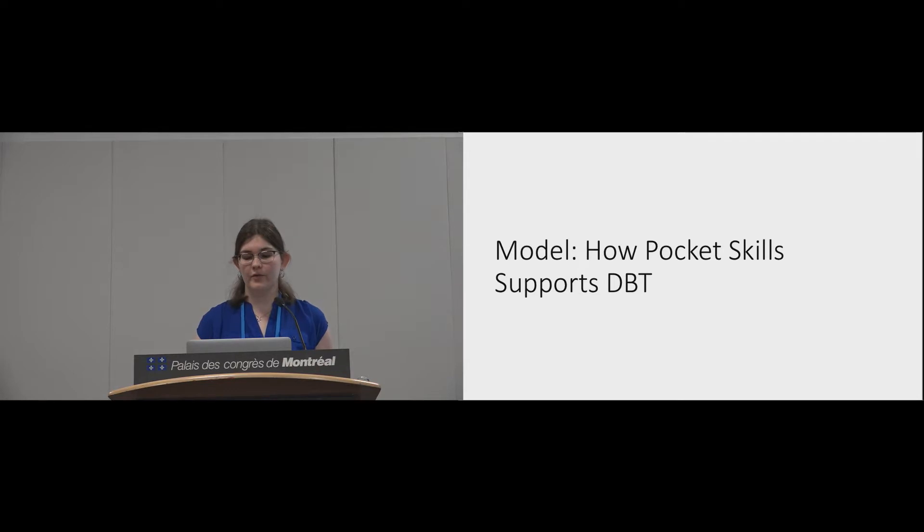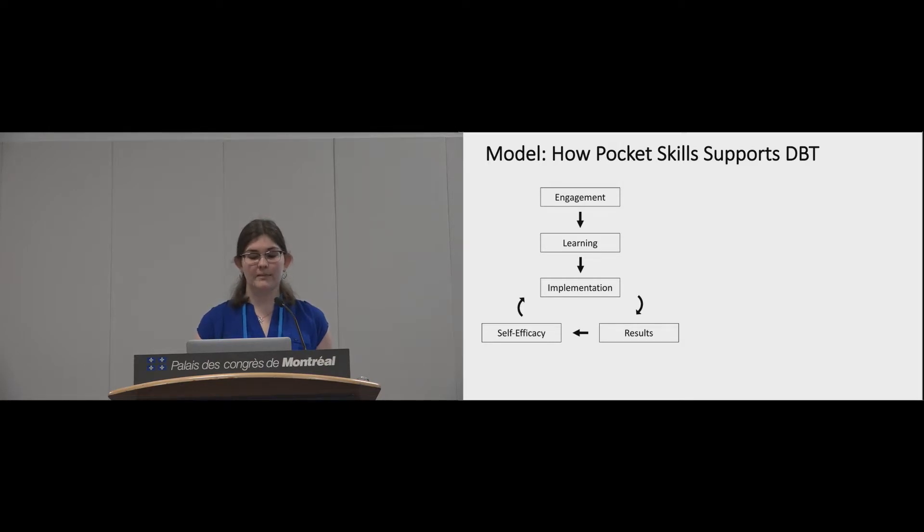We also conducted an open coding exercise of the participant responses to the free answer exit survey questions to identify emergent themes. We used methods from grounded theory to develop a model of how participants felt PocketSkills supported their DBT. Our model illustrates that PocketSkills helped people engage with their DBT and learn and practice skills in their environmental context, which enabled them to implement their skills in their daily lives and see the results of using these skills. This helped them increase their self-efficacy and feel more capable of using skills in the future. The paper discusses the full model, but I'm going to focus on this cycle today. How implementing skills helped people see concrete results, increase their self-efficacy, and in turn feel more capable of implementing skills.